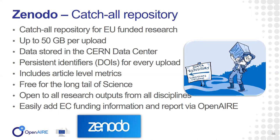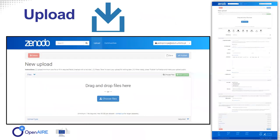Zenodo is a catch-all repository, meaning you can deposit publications but also other kinds of research outputs such as software, datasets, presentations, and reports. You can have a free upload of up to 50 gigabytes per record — which for publications is more than enough. You will have a personal area where you can check all your uploads. You can also use Zenodo to create communities for your project, allowing partners and researchers involved in the project to use that specific collection to deposit their outputs.